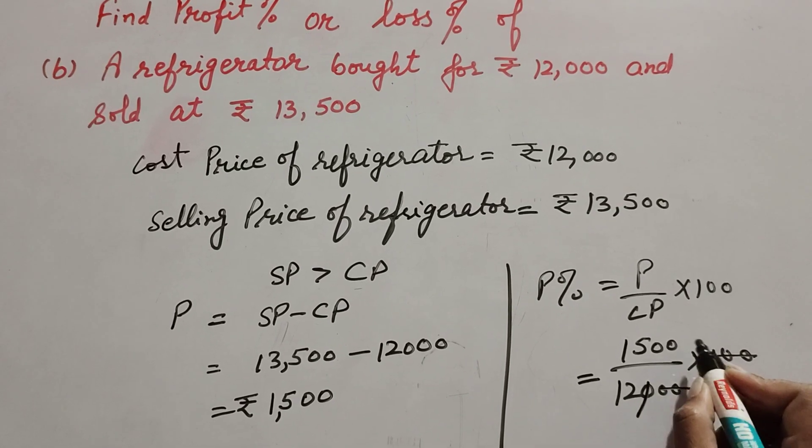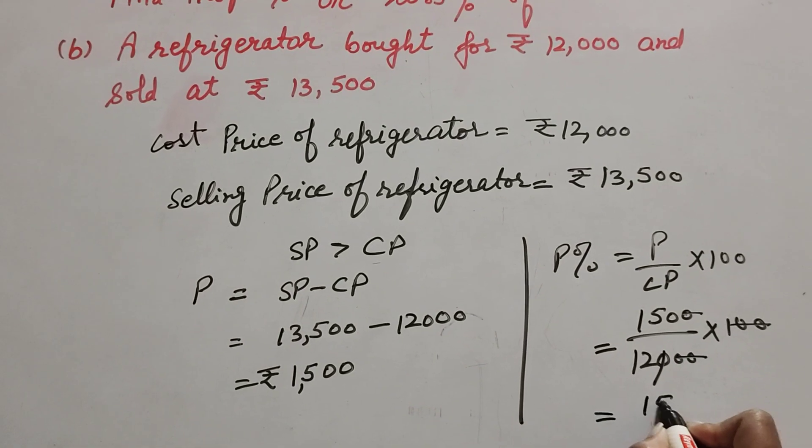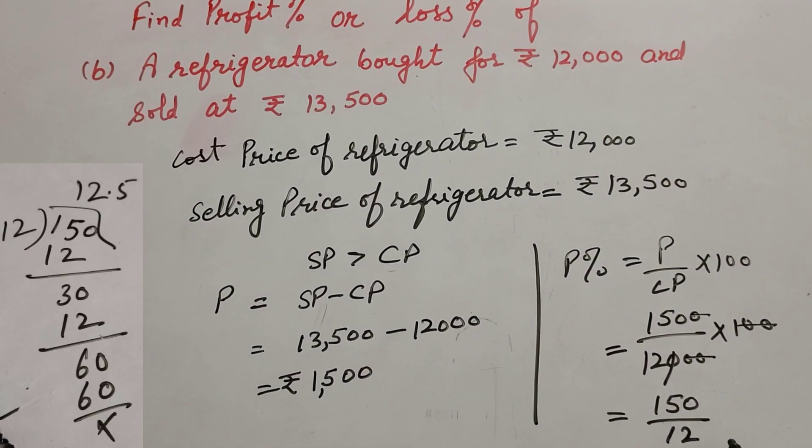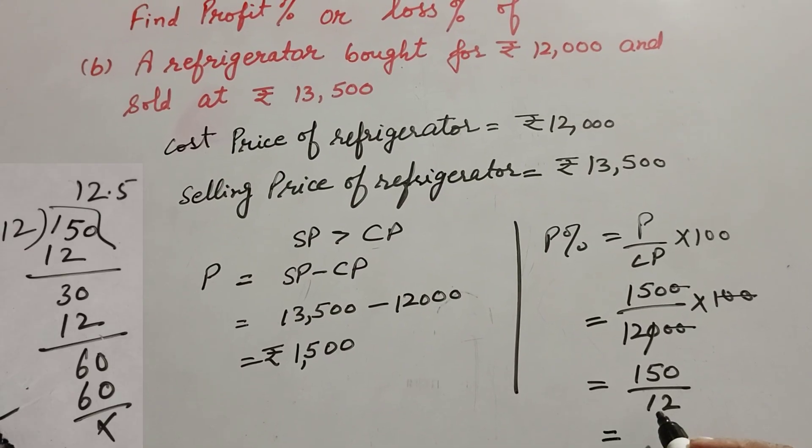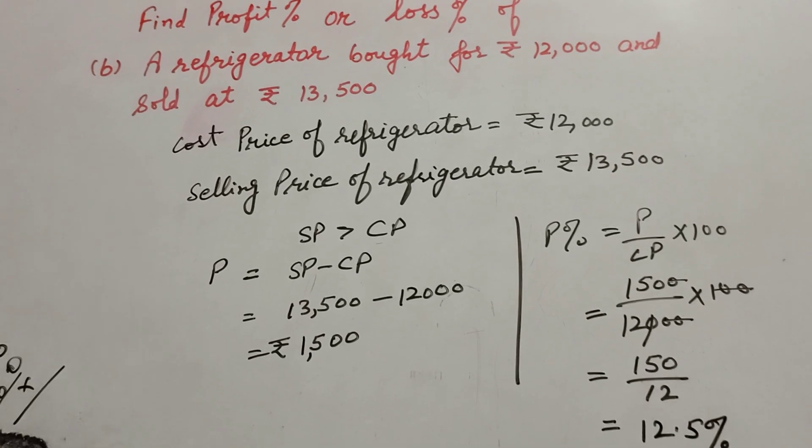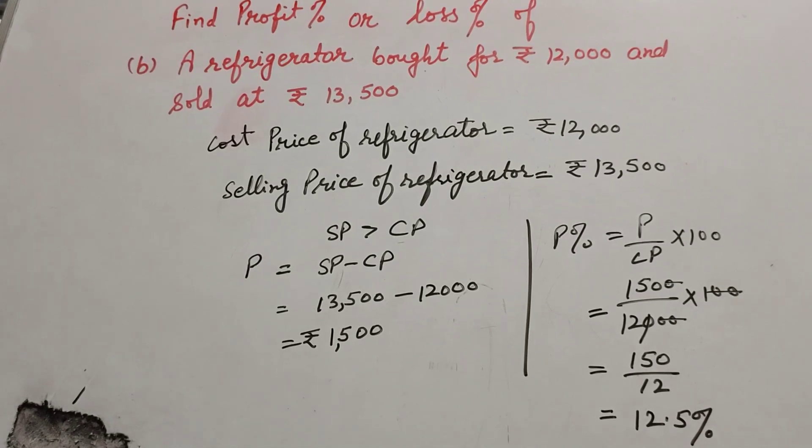The zeros in numerator and denominator cancel. Now we have 150 divided by 12. 150 divided by 12 equals 12.5%. So the profit percentage is 12.5%.